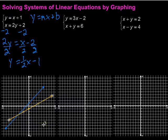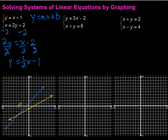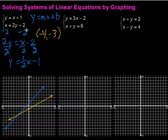Looking at how the graphs interact, three things can happen: they can cross at one point, lie on the same line, or be parallel. In this case, it looks like they cross. Counting back, the point where they cross is negative 4, negative 3. That should work in both equations — negative 4 plus 1 is negative 3, and substituting into the second equation, negative 3 times 2 plus 2 equals negative 4. Sure enough, it works.